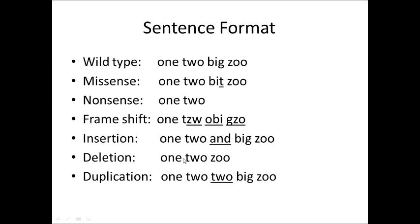Let's look at a deletion. The sentence reads: one, two, zoo. We lost the word 'big' — we deleted it. It's not a stop codon because everything downstream can still go; 'zoo' is still there. We just deleted a triplet. Had we only deleted 'bi,' GZO would have been our next word, giving us a frameshift mutation. Frameshift mutations happen when one or two letters are inserted or deleted, but when three are inserted or deleted, it's called an insertion or deletion, which does not cause a frameshift.